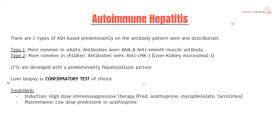Treatment is twofold. First, you want to induce remission by starting the patient on high-dose immunosuppressive therapies. You don't need to know the exact regimens, but most commonly we use steroids like prednisone, azathioprine, and second-line agents like mycophenolate mofetil and tacrolimus. Once remission is induced and you have a more long-term treatment plan, you'd start them on maintenance therapy — usually lower-dose prednisone or azathioprine.